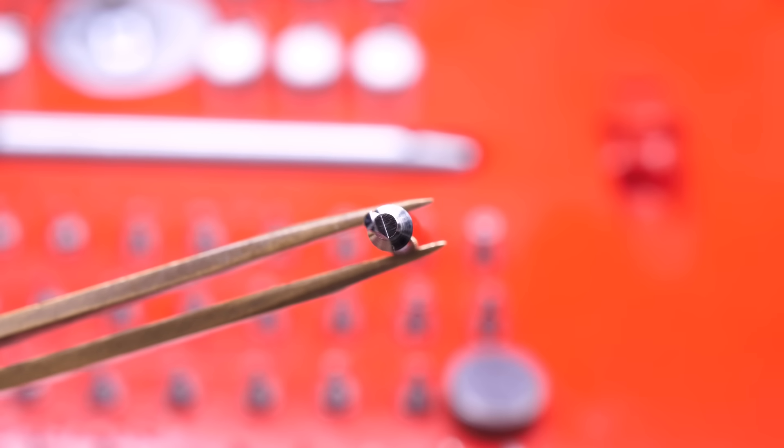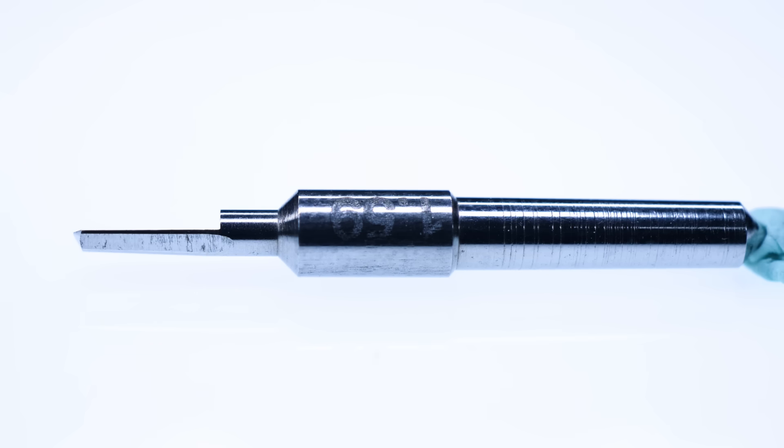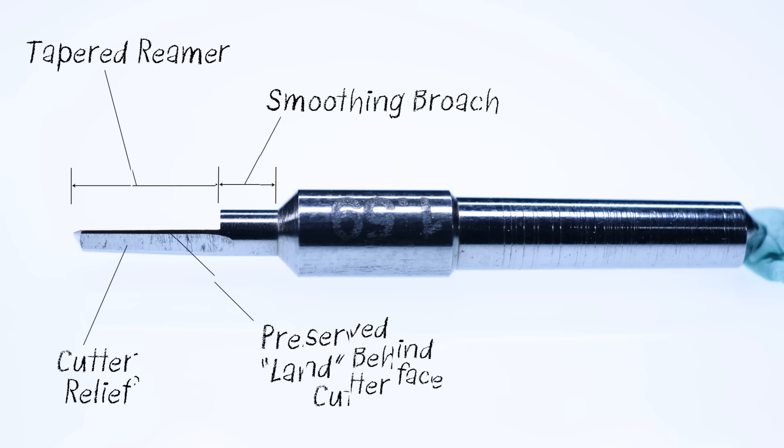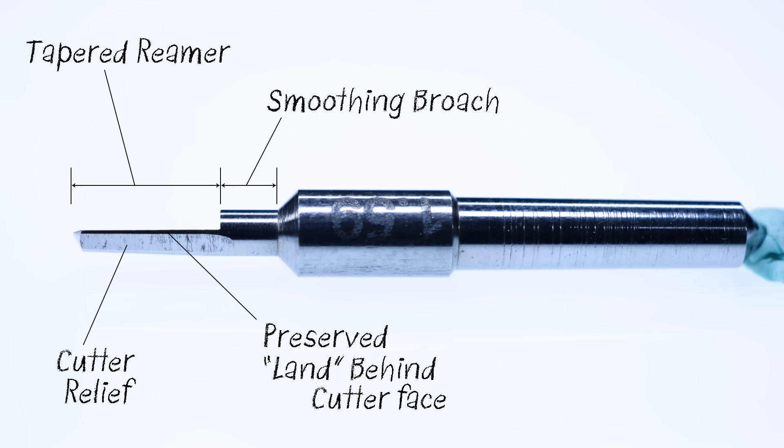Now it's worth pointing out that in this case the cutter is required to be both a cutting reamer and a smoothing broach all in one, with the cylindrical section required to be formed to that critical one hundredth under dimension.